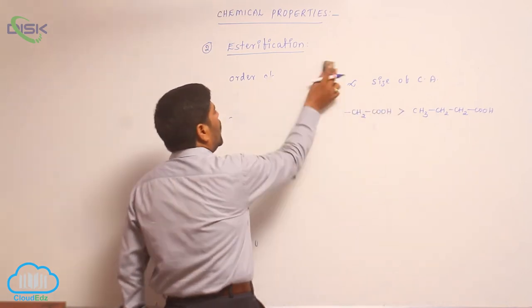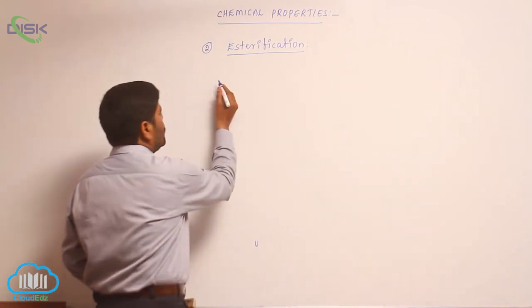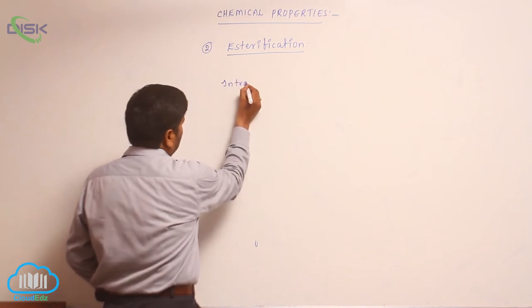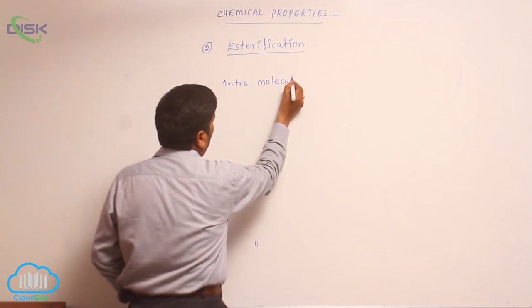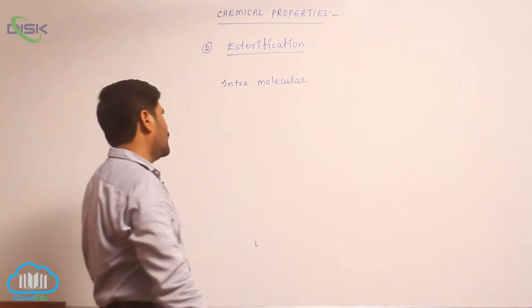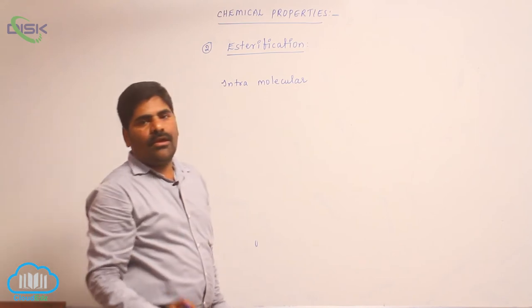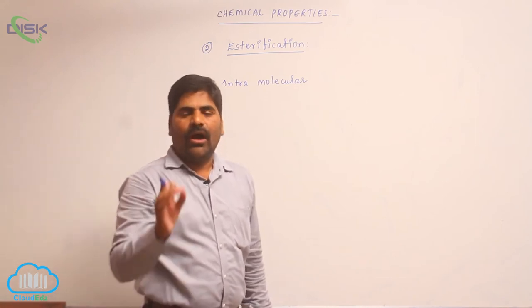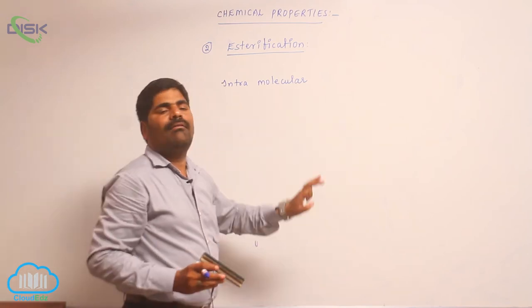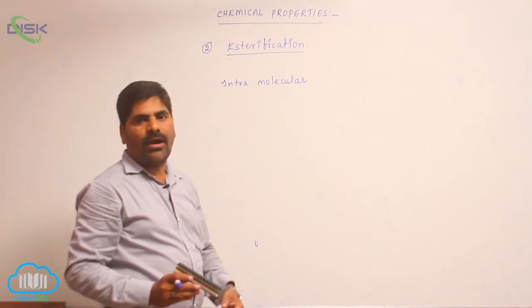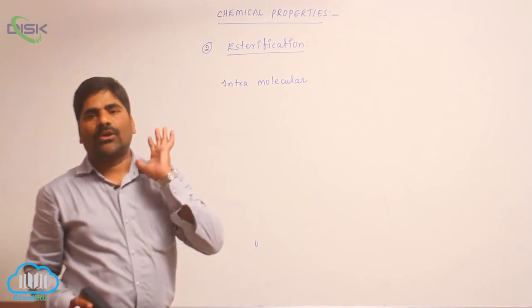If a molecule contains both a hydroxyl group as well as a carboxylic group, intramolecular esterification takes place. If a single molecule contains a hydroxyl group and a carboxylic group, intramolecular esterification reaction takes place, and a cyclic ester is formed. These cyclic esters are known as lactones.